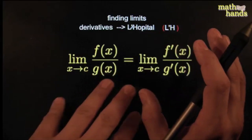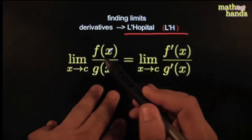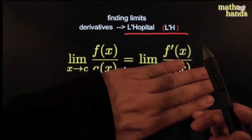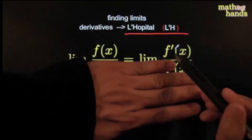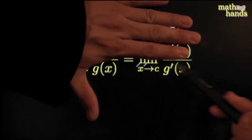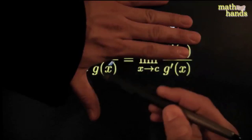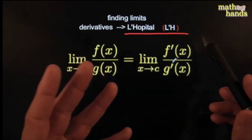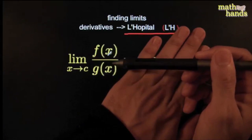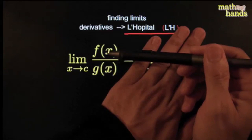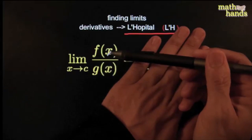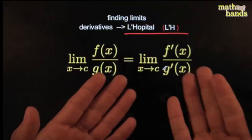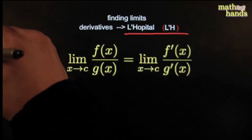Under good conditions, if you've got a quotient and you're trying to find a limit and you get an indeterminate form like zero over zero or infinity over infinity, L'Hôpital says don't worry — just take the derivative of the top and the derivative of the bottom. No quotient rule, nothing fancy. Then find the limit of that new fraction. That should be enough to do the first example.